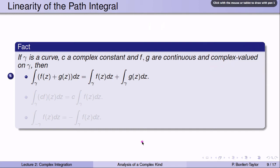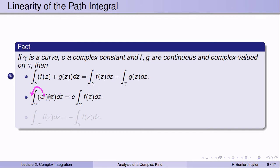Here are some facts about complex curve integrals. With gamma a curve, c a complex constant, and f and g continuous and complex-valued on gamma: the integral over gamma of (f+g) can be split as the integral of f plus the integral of g; complex constants can be pulled out of the integral; and the integral over the reverse path equals the negative of the integral over the original path.